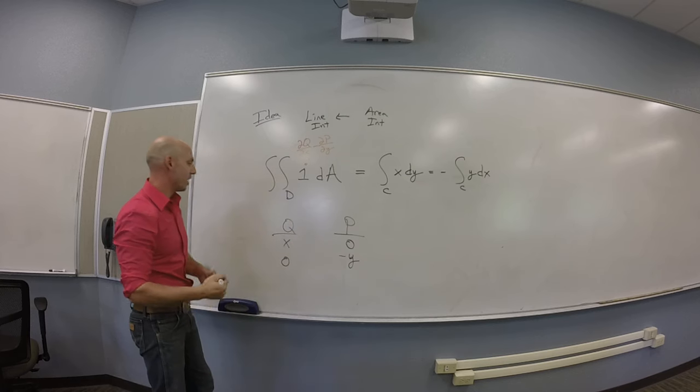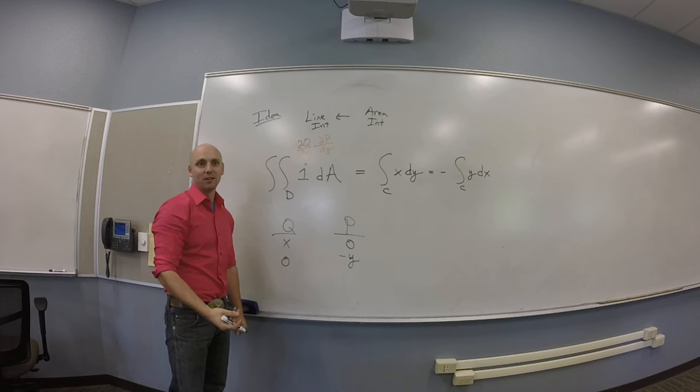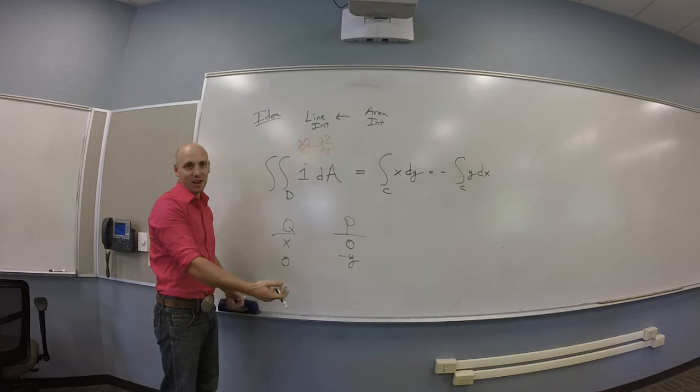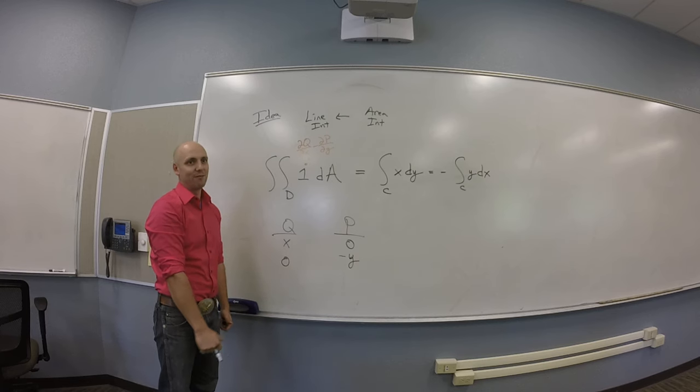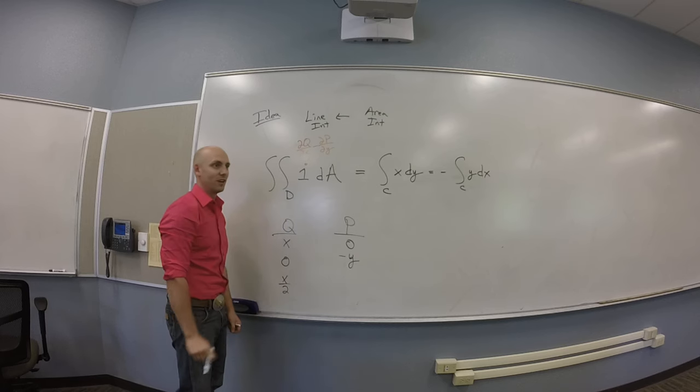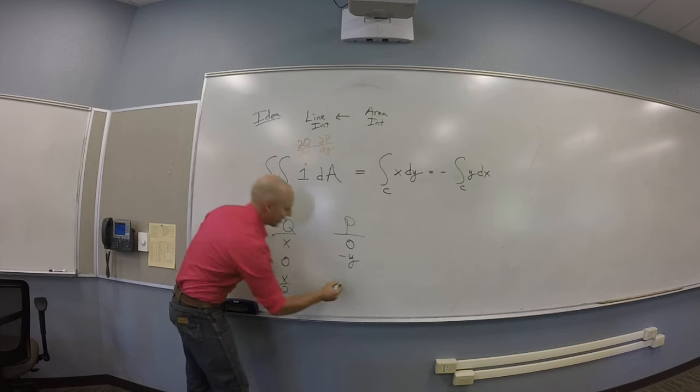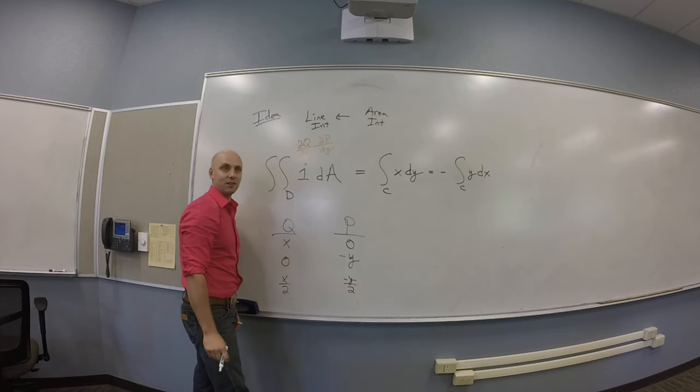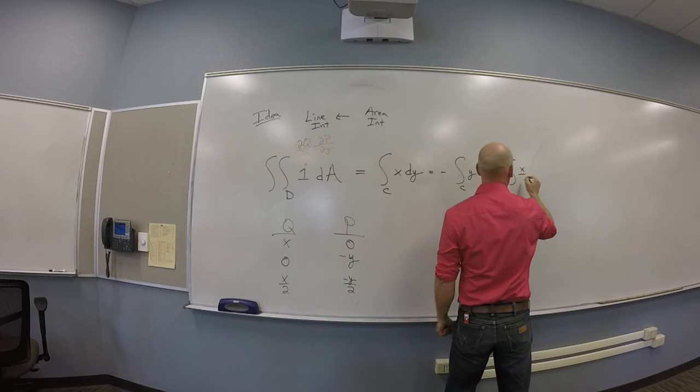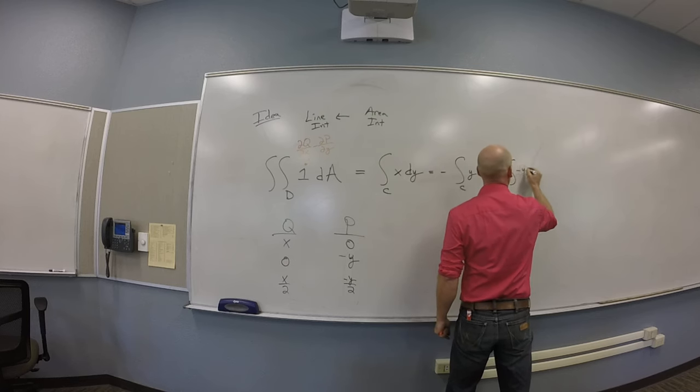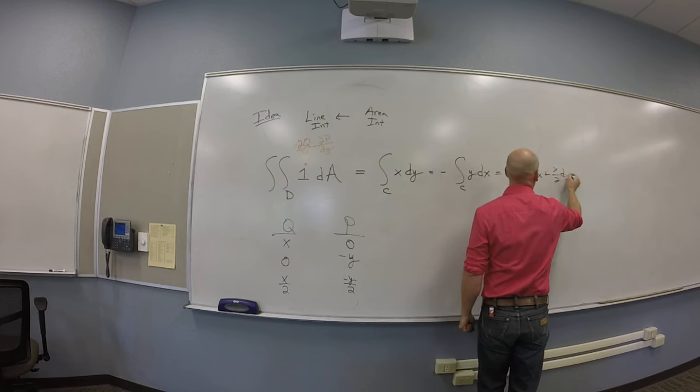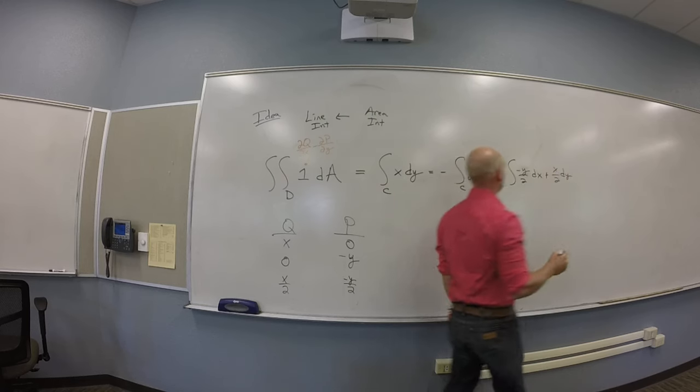So there's one more choice you could make. You could split things halfway. Instead of putting all your eggs in the Q basket or all your things in the P basket, you could put half and half. I think you'd do X over 2 and negative Y over 2. So apparently this is also equal to the integral of negative Y over 2 dx plus X over 2 dy.